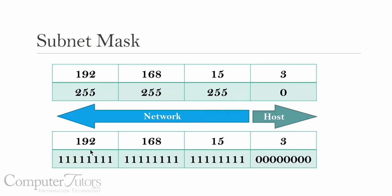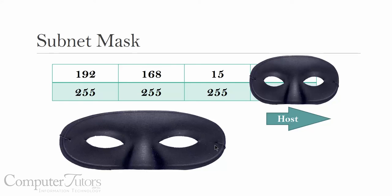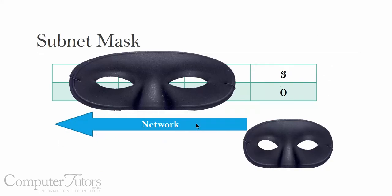If we had written out the 255s, that's three sets of eight on-bits, and then the zero is eight off-bits. When they talk about masking, the subnet mask masks which portion is the network address — so the network side is identified by the ons, and the host is masked off. When we look at the other side, the network is being masked and what's exposed is the host address. Let's move over to the whiteboard and do some examples.